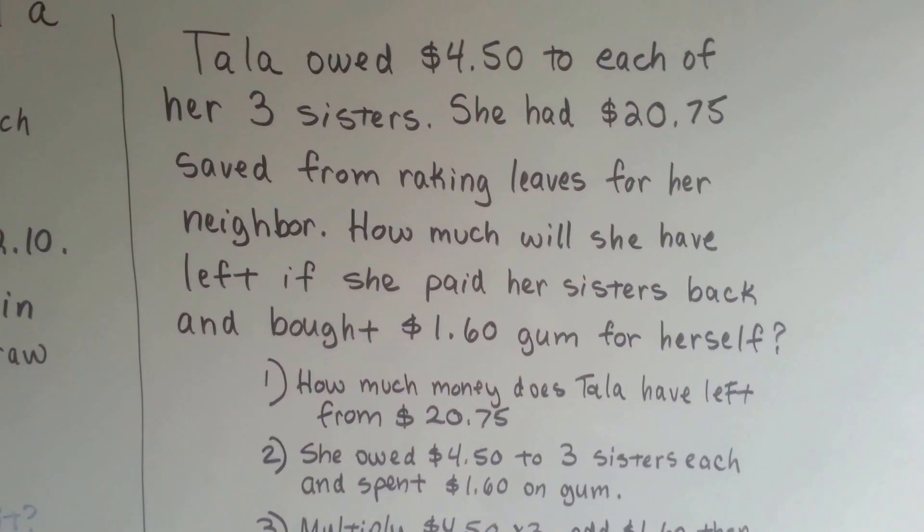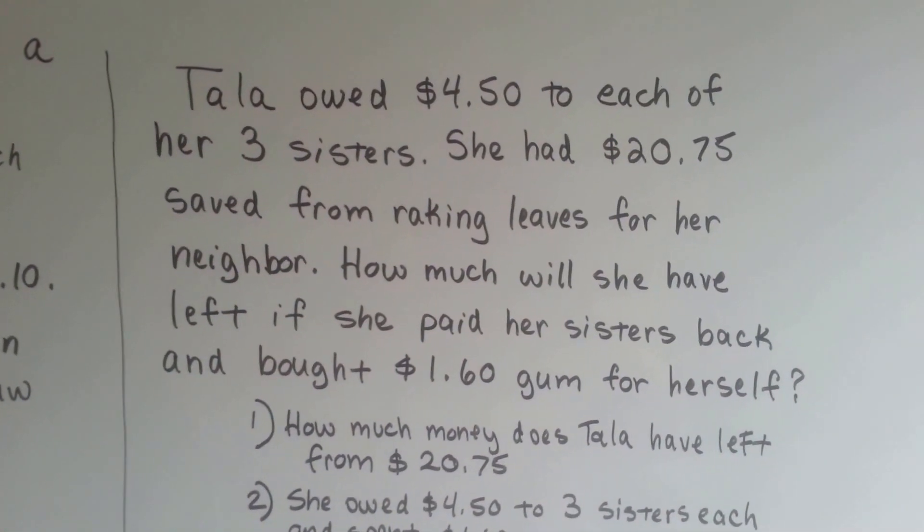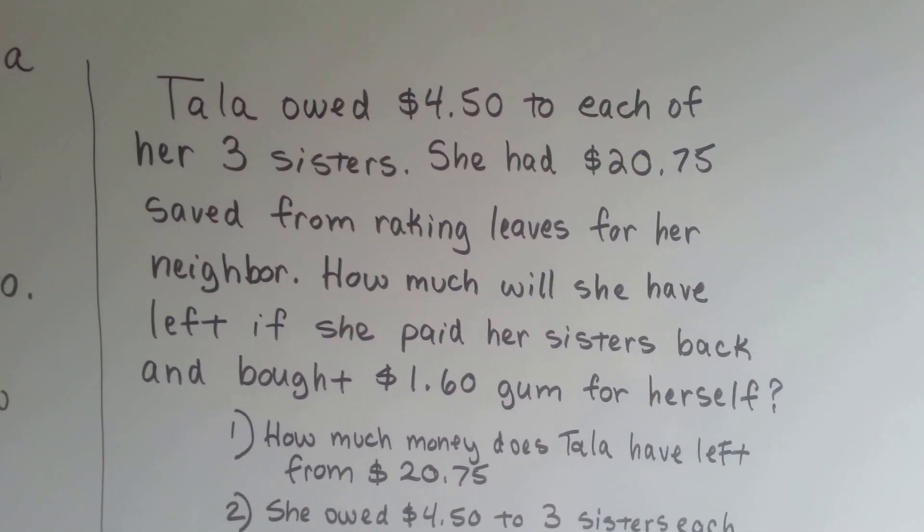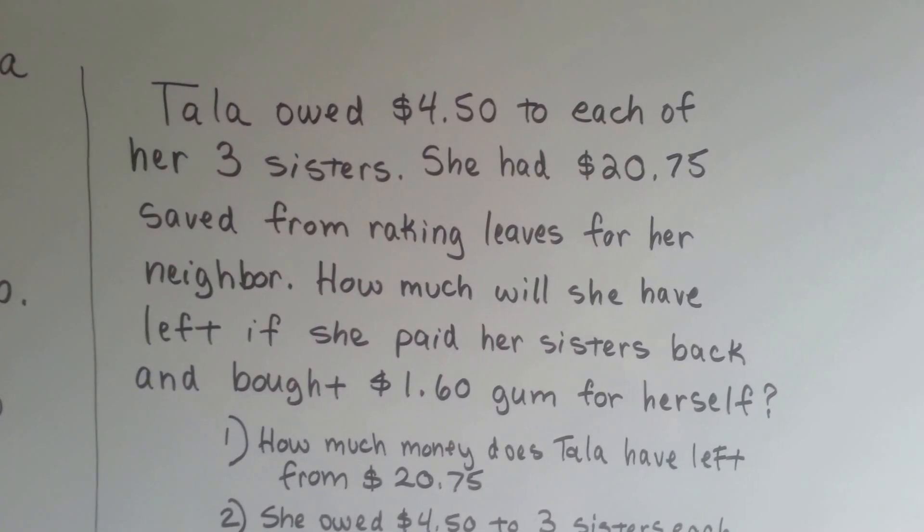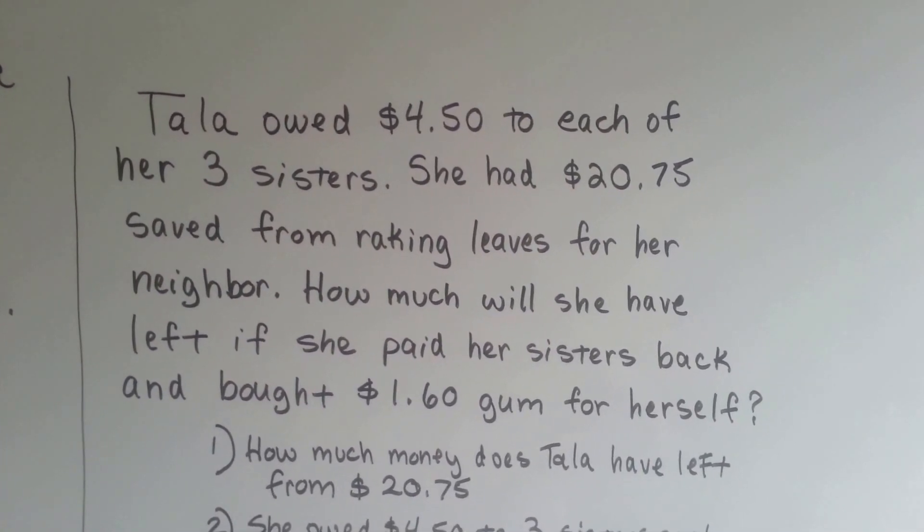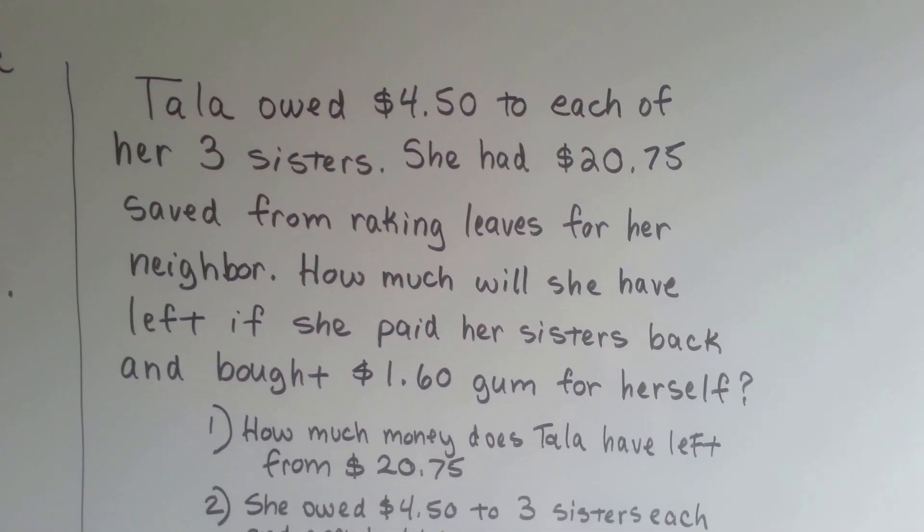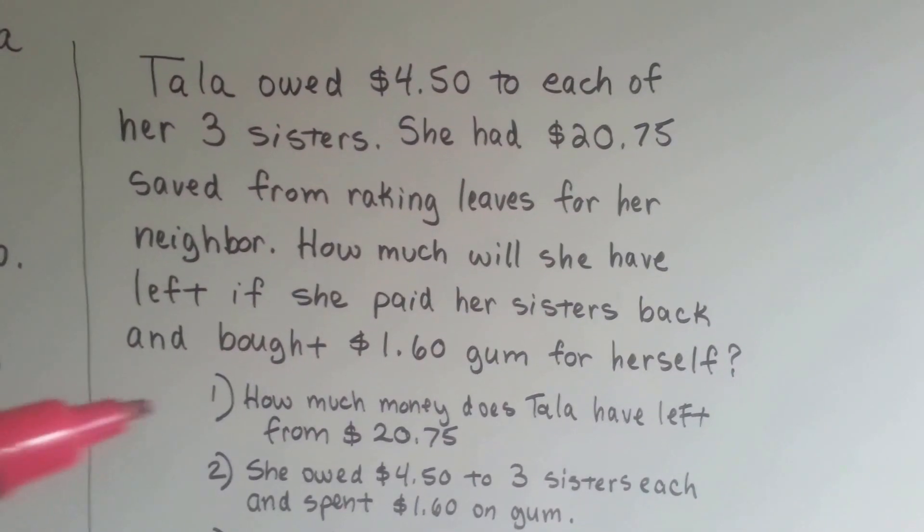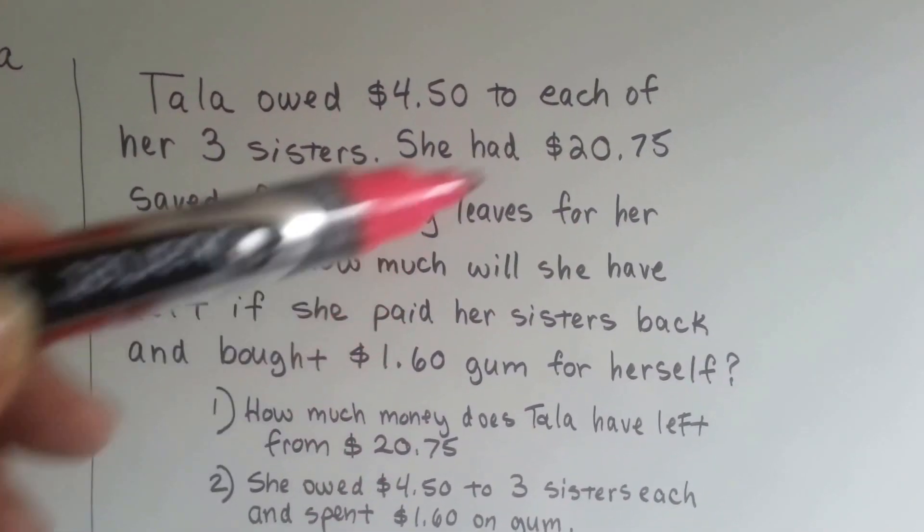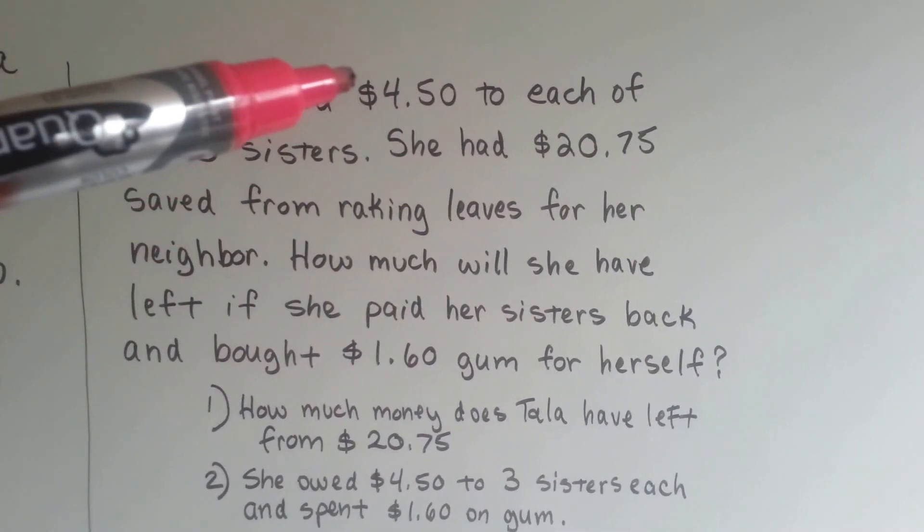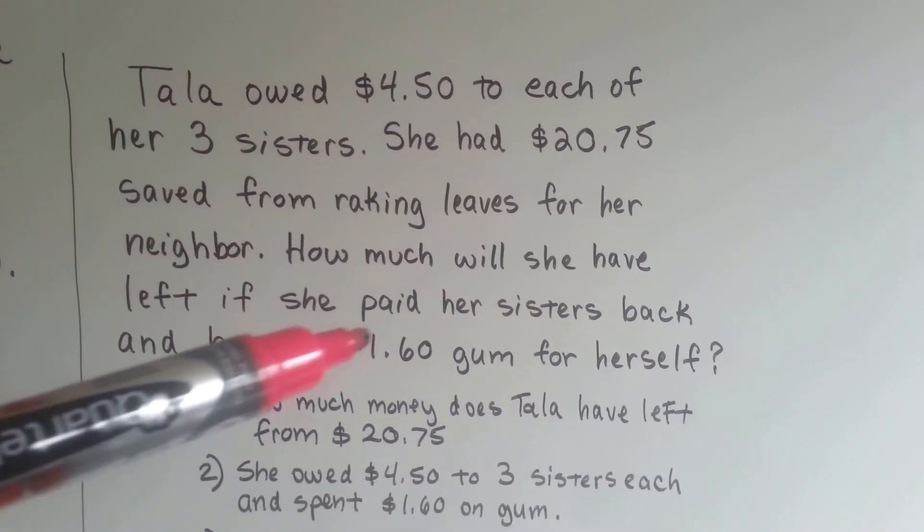Let's try one last one. Tala owed $4.50 to each of her three sisters. She had $20.75 saved from raking leaves for her neighbor. How much will she have left if she paid her sisters back and bought $1.60 of gum for herself? So how much money does Tala have left from $20.75? Because that's how much she had saved from raking. She has to pay back three sisters each $4.50 and she bought gum.